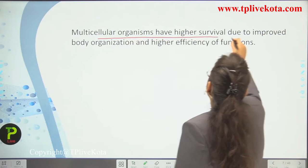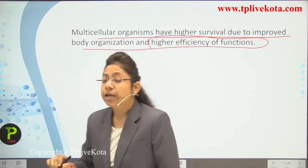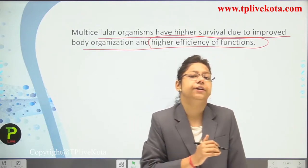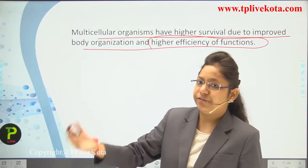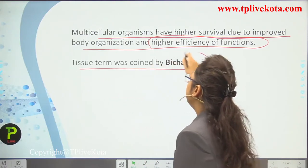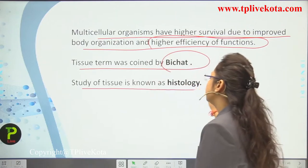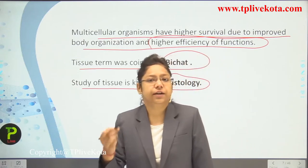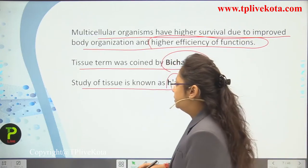Multicellular organisms have higher survival due to improved body organization and higher efficiency of functions. A single cell in a unicellular organism performs everything, whereas in multicellular organisms different tissues perform different functions, giving higher survival. The term 'tissue' was coined by Bichat. The study of tissue is known as histology.